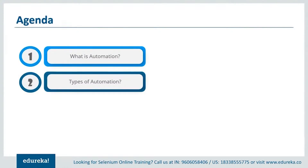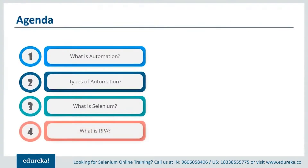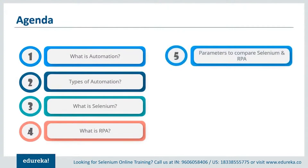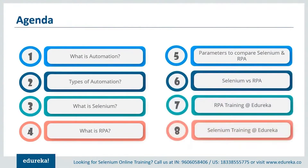First we'll talk about the automation testing tool Selenium and learn its features. Once we're done with that, we'll take a look at the business process automation technology RPA and comprehend how it is used to automate repetitive tasks. Moving further, we'll discuss the parameters taken into consideration for comparing both Selenium and RPA and talk about the similarities between these tools. And finally, we'll wrap up this session by comparing them based on those parameters.